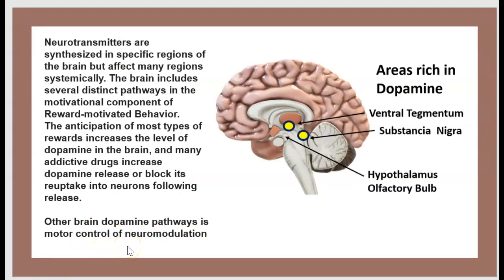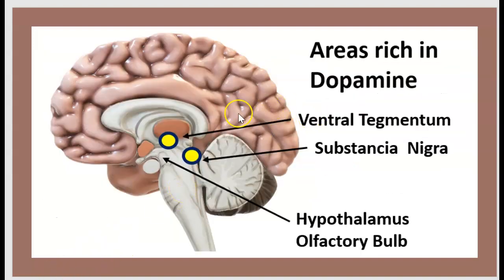Neurotransmitters are synthesized in a specified region of the brain, but they affect many regions systematically. The brain includes several distinct pathways in the motivational component of reward, motivation, and behavior. The anticipation of most types of reward increases the level of dopamine, and many addictive drugs increase dopamine. Other brain dopamine pathways involve motor control and neuromodulation. Key areas rich in dopamine are the ventral tegmentum, substantia nigra, hypothalamus, and olfactory bulb.